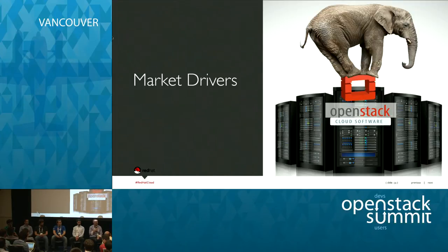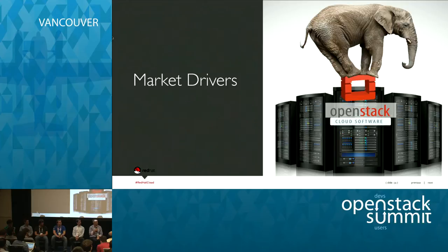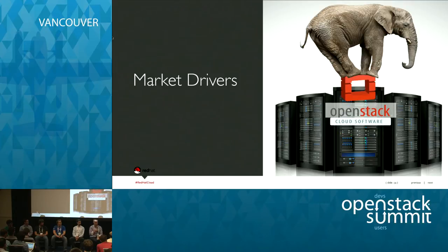Going back 18 months, that was all predominantly bare metal deployments, because that's what Hadoop in its early stages was designed for. But in the last 18 months, that has transitioned to a very significant proportion of both public and private cloud deployments. In the private cloud deployment, OpenStack is the clear leader from our customers' perspective. The biggest thing we see is just customer data volumes totally outstripping even our potential to really satisfy the market at the moment.